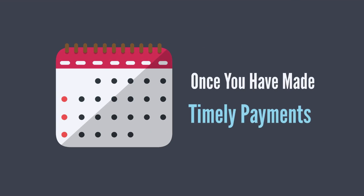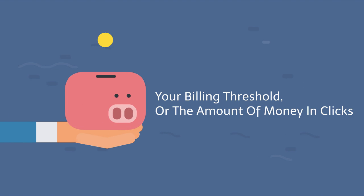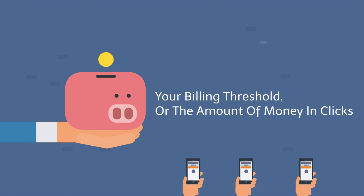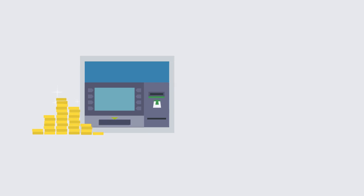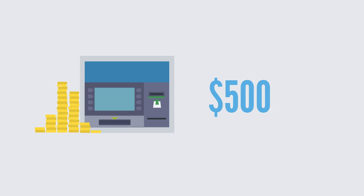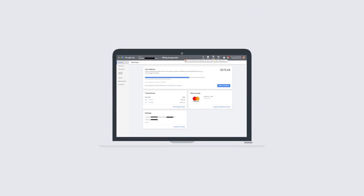Once you have made a couple of timely payments, your billing threshold — or the amount of money in clicks you can accumulate before your card is charged — will increase to $500. The billing threshold is visible on your payment dashboard.